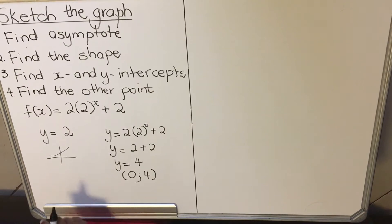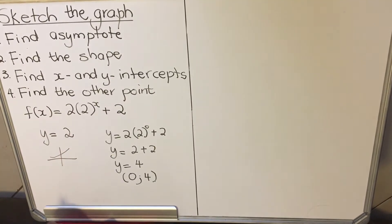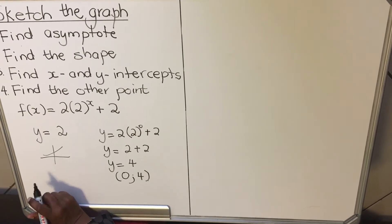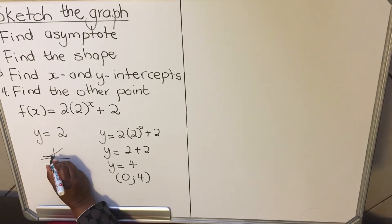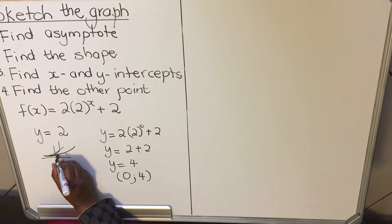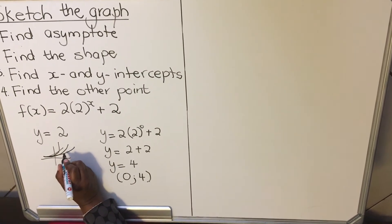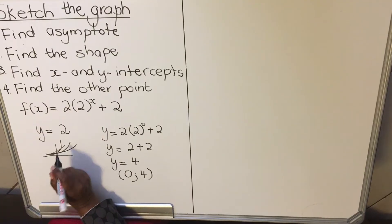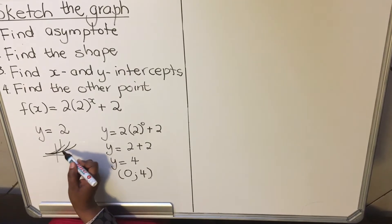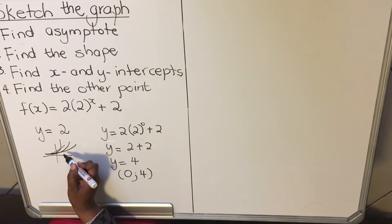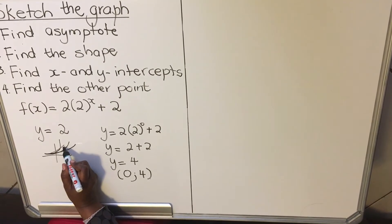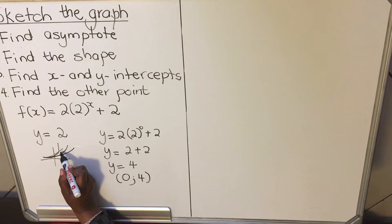Next, find the other point. Why do you need the other point? When drawing your graph you need to know the direction — must I go like that or like that? You need the other point to guide you in the quadrant. With this shape, my graph goes up in the first quadrant, so I need to find the other point in the first quadrant.